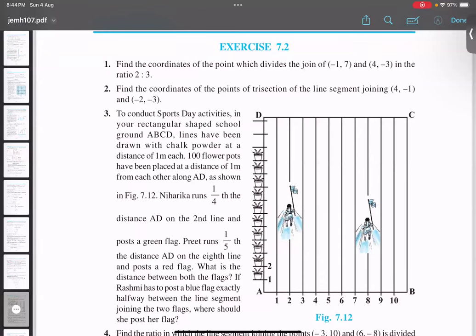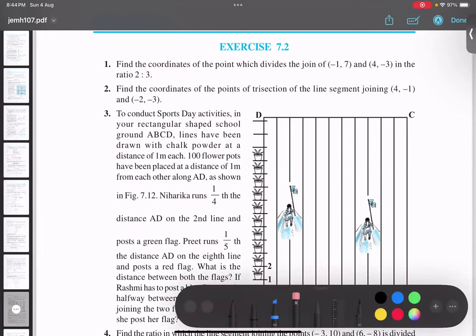In question number two, the question is asking about finding the coordinates of the point of trisection. The word trisection is important. Trisection of the line segment joining (4, -1) and (-2, -3).